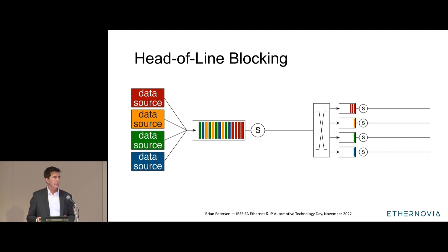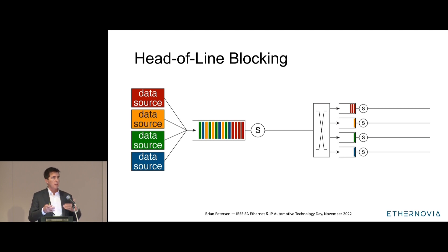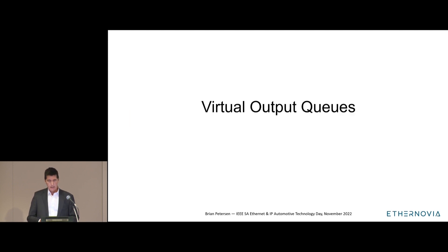An easy way to think of head-of-line blocking is driving up a hill on a single-lane road with a big heavy truck in front of you — that truck limits your speed, there's no room to pass, and all cars behind the truck go no faster than the truck. Virtual output queues give us a passing lane so we can avoid head-of-line blocking.